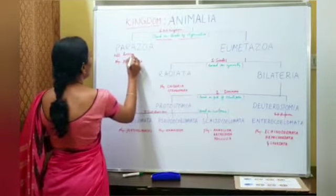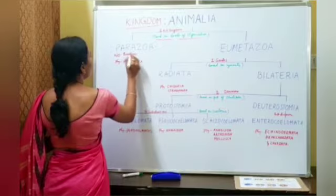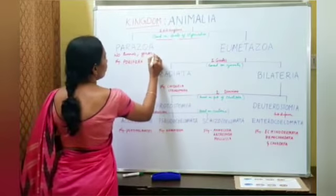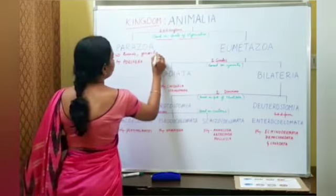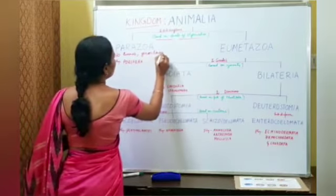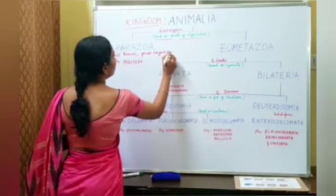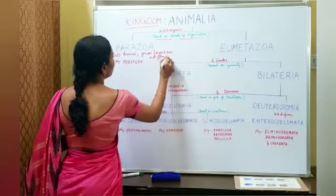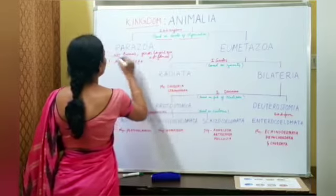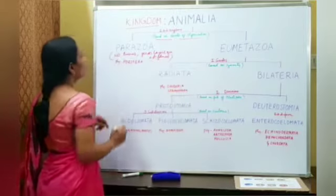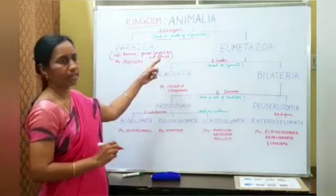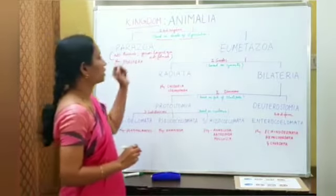In Parazoa, no tissues are formed and germ layers are not formed. This is a cellular grade of organization.